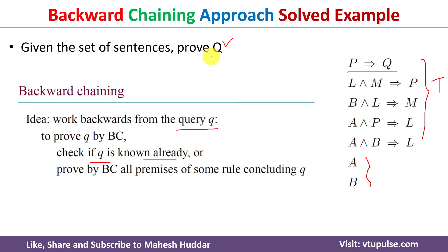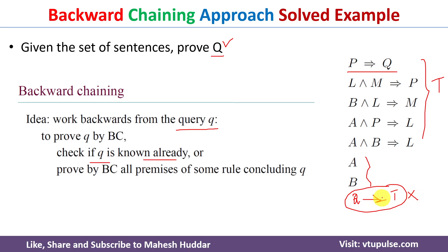For example, in this case the query is Q. If Q is already present in the facts, it is already true and we will stop. Right now Q is not present in the facts, so what we need to do is select some rule where Q is present on the conclusion side.